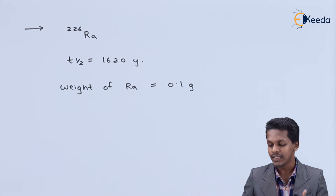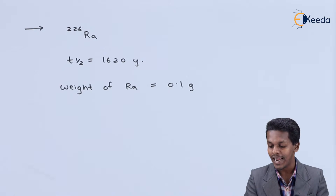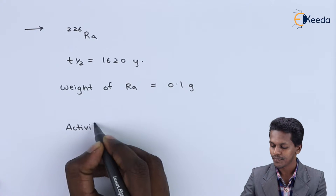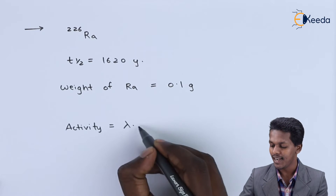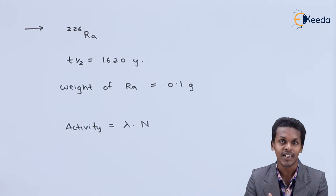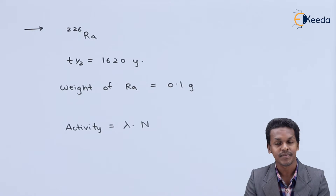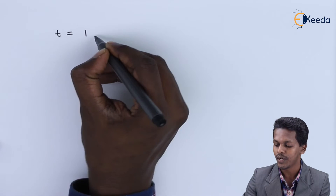Based on the extracted data, let us calculate the activity. Activity is the product of the decay constant and the number of particles present in 0.1 gram of radium. The time interval in which the change should occur is given as 1 year, so t equals 1 year.